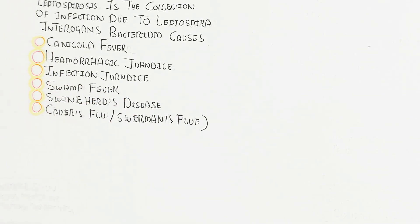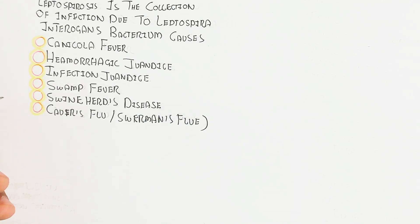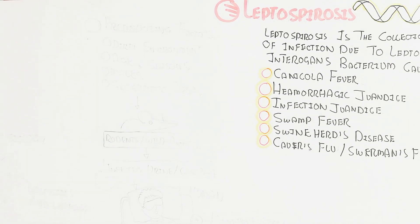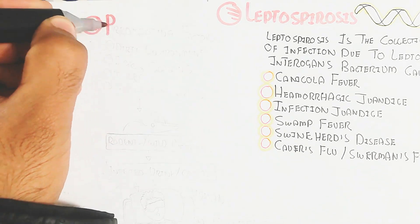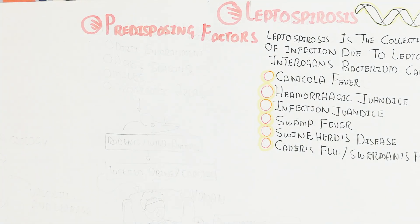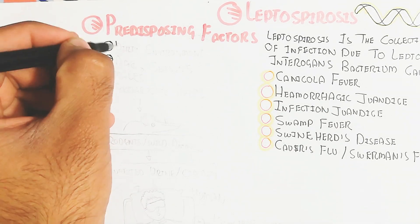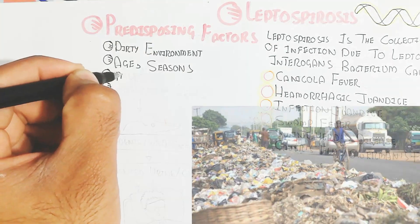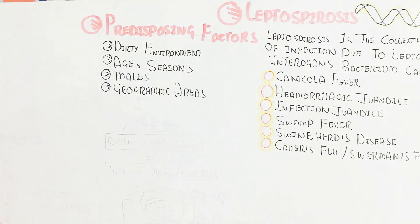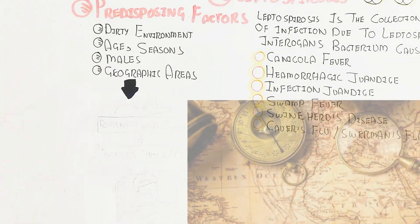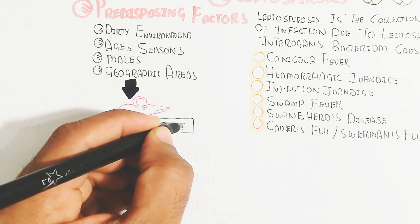The predisposition factors include the dirty environment — meaning a garbage-containing environment where the population of bacteria is present. The dirty environment is an important factor causing leptospirosis because it increases chances of bacterial infection. Other factors include age, seasons, males, and geographic area. All these factors lead to rodent and wild animal infection.